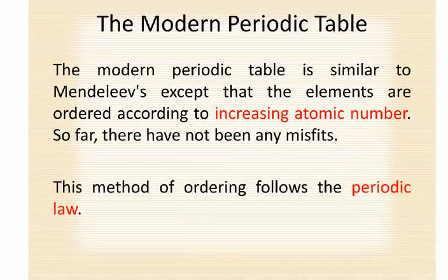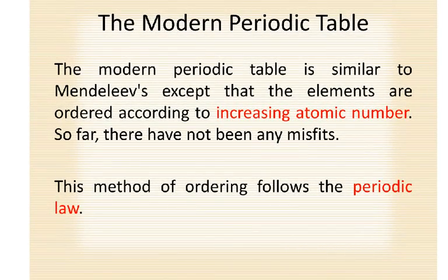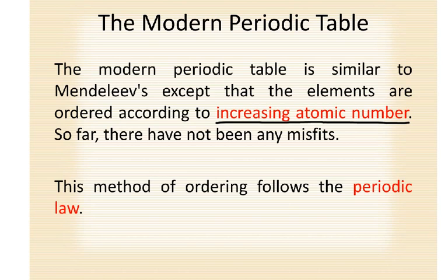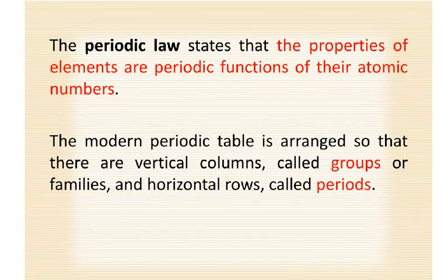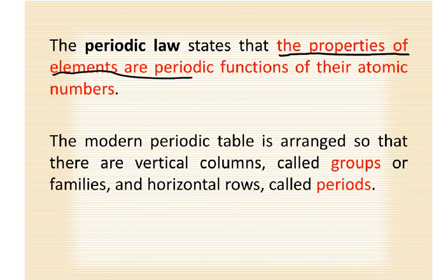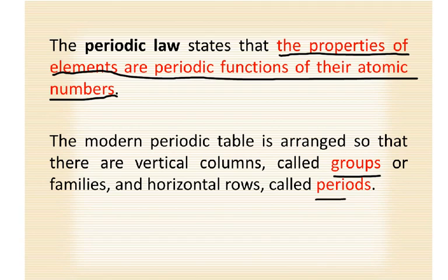Now let's look at the modern periodic table. We don't go by atomic masses anymore. The modern periodic table is similar to Mendeleev's, except that the elements are ordered according to increasing atomic number. So far, there have not been any misfits, because we don't have any half protons — you either have one proton or two protons. The method that we're using is called the periodic law, which states that the properties of the elements are periodic functions of their atomic numbers. The modern periodic table is arranged so that there are vertical columns called groups or families and horizontal rows called periods.